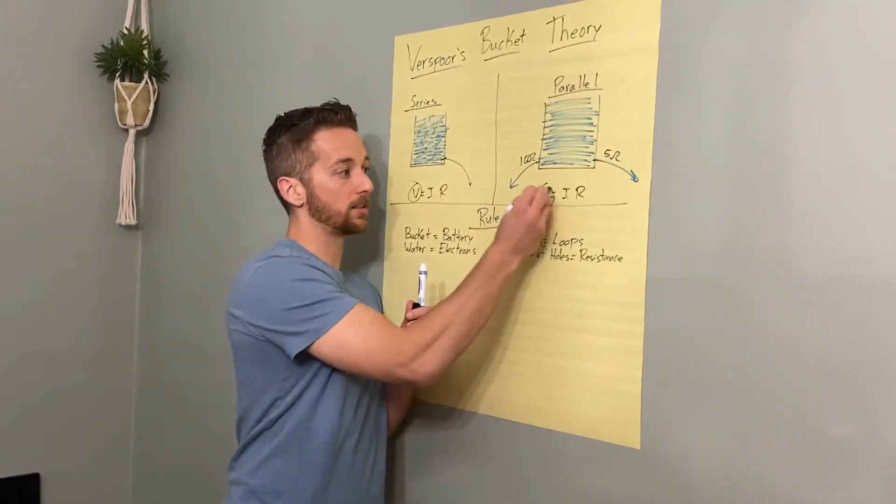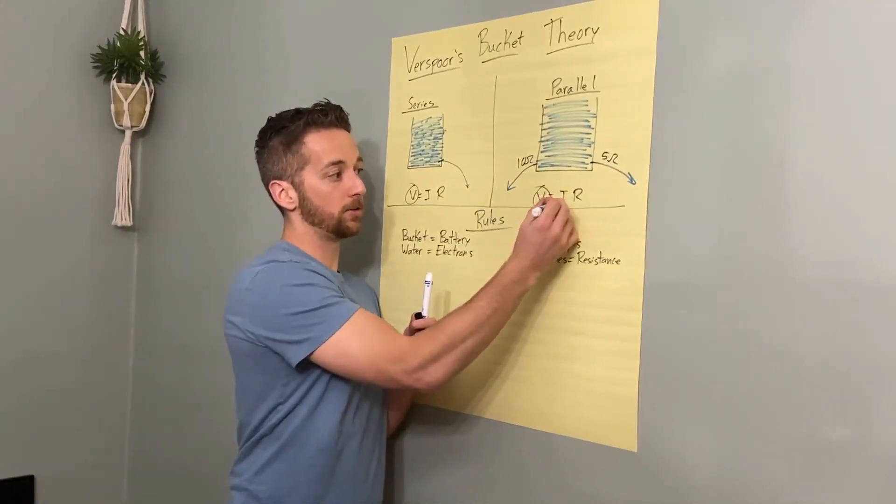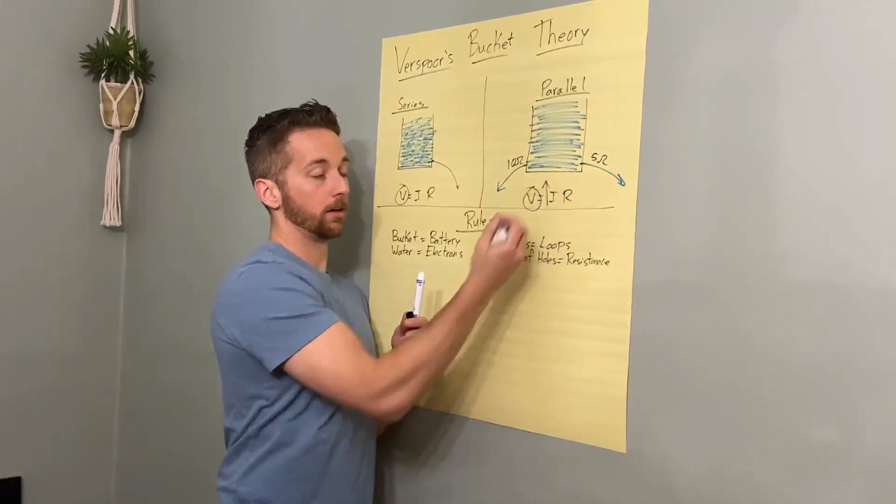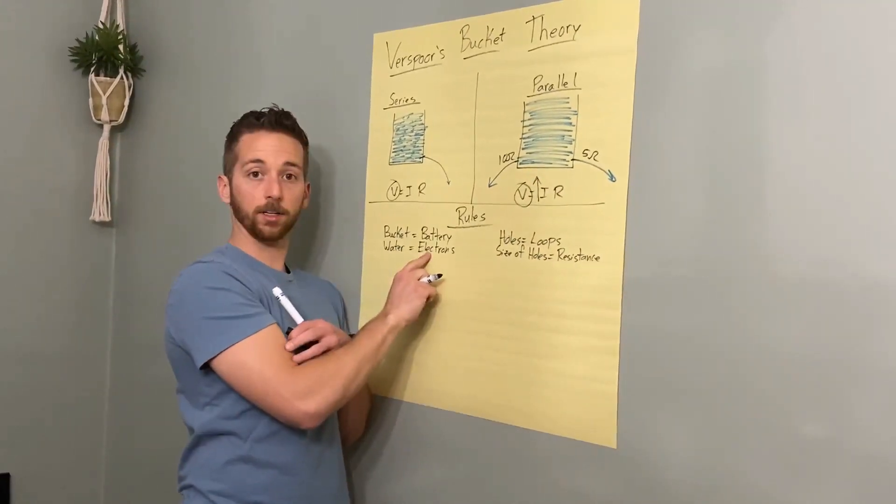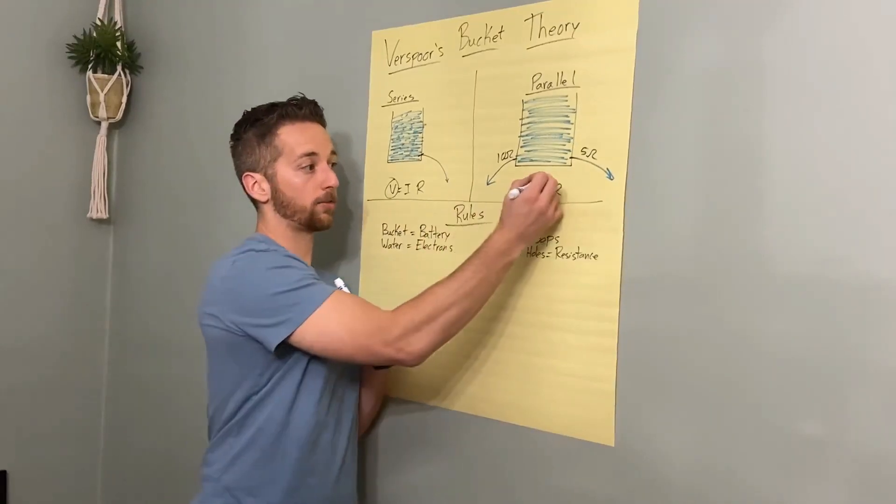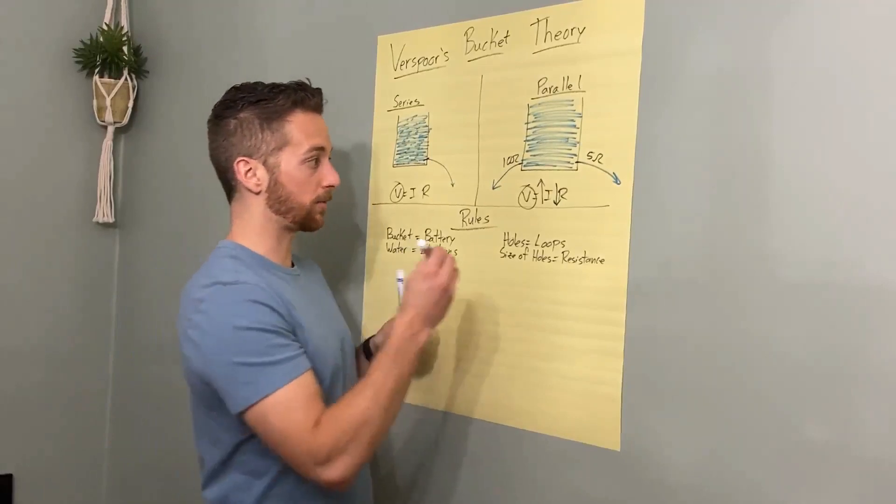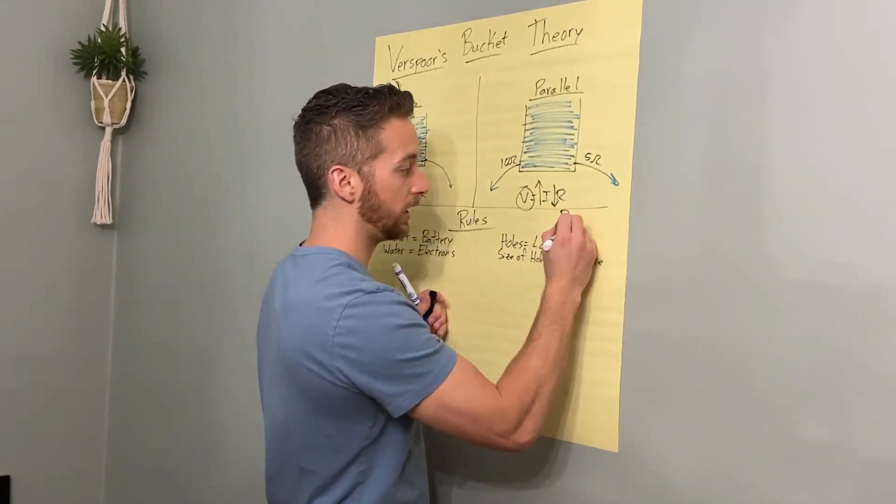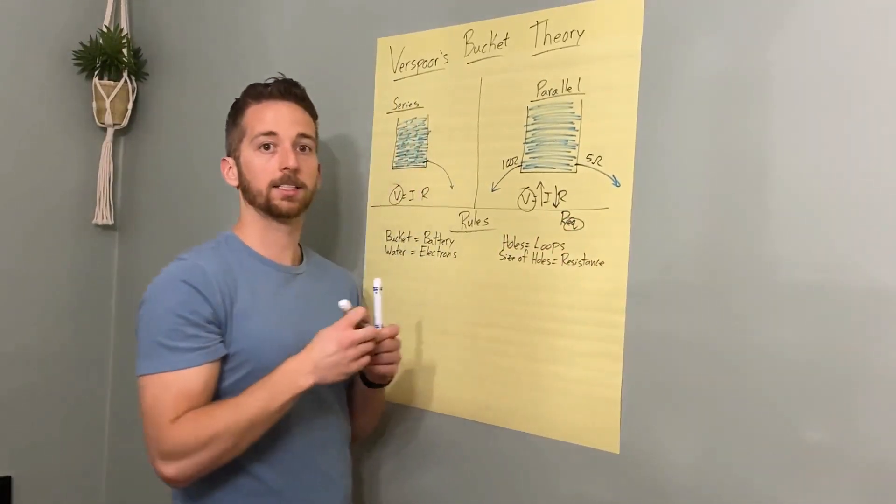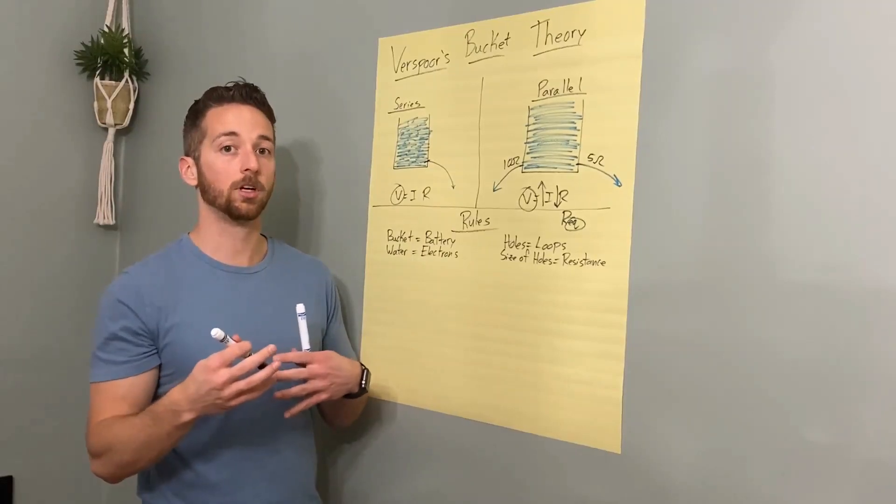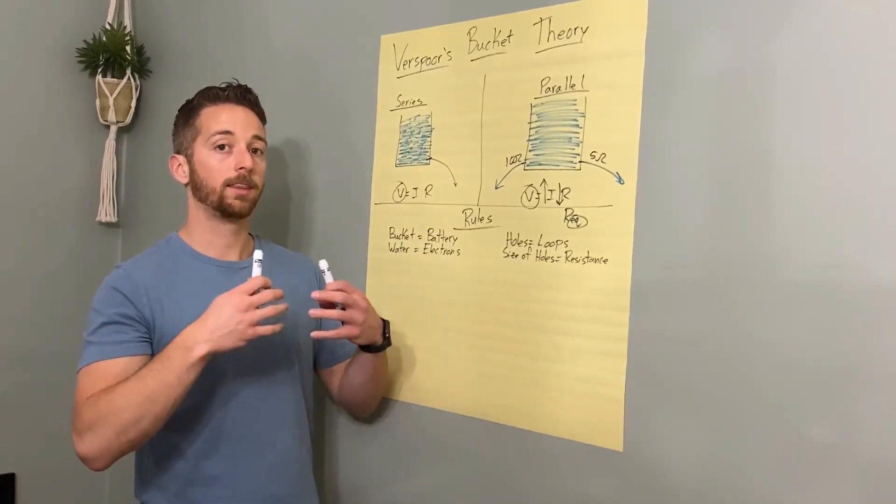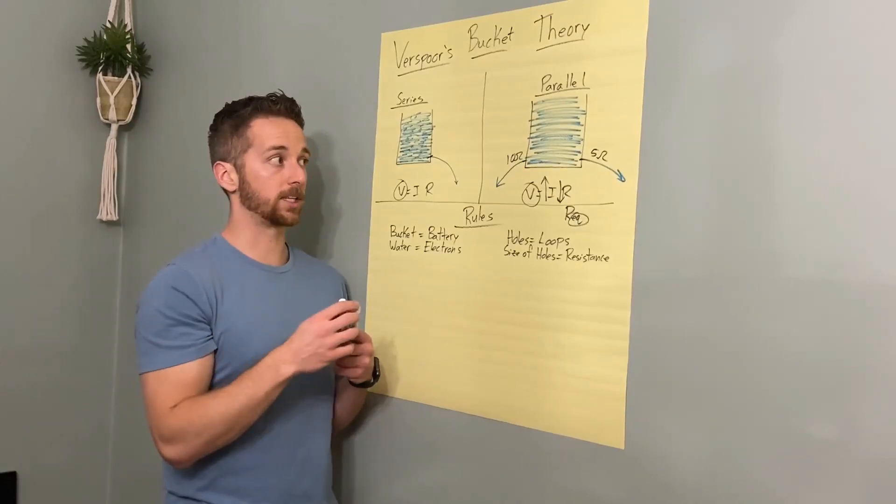So according to Ohm's law, we have constant voltage, but now we're losing more water. Water is your current, your electrons, and therefore we're going to be having a lower equivalent resistance. That's why in your reference table it says REQ for equivalent. It doesn't say the total or the summation of your resistance. It's what the resistors would be equivalent to if you just had one instead.